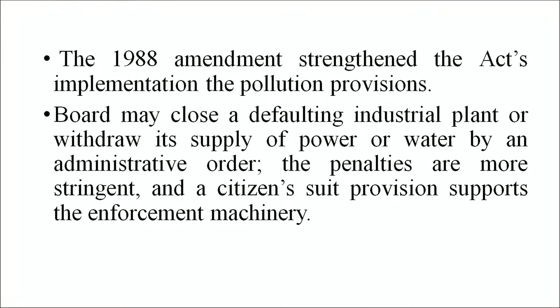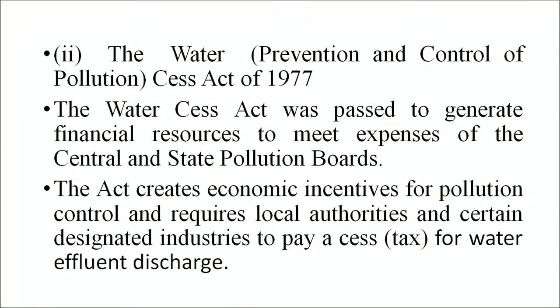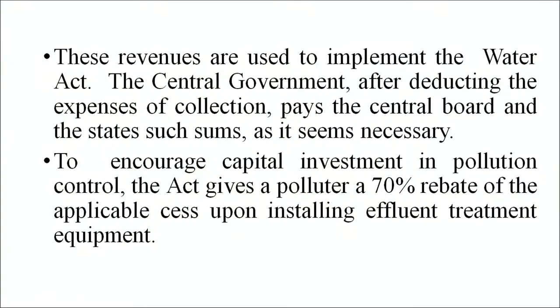The Water Prevention and Control of Pollution CESS Act of 1977 was passed to generate financial resources to meet expenses of the central and state pollution control boards. The act creates economic incentives for pollution control and requires local authorities and certain designated industries to pay a CESS — also called a tax — for water effluent discharge. These revenues are used to implement the Water Act. To encourage capital investment in pollution control, the act gives a polluter a 70 percent rebate of the applicable CESS upon installing effluent treatment equipment.